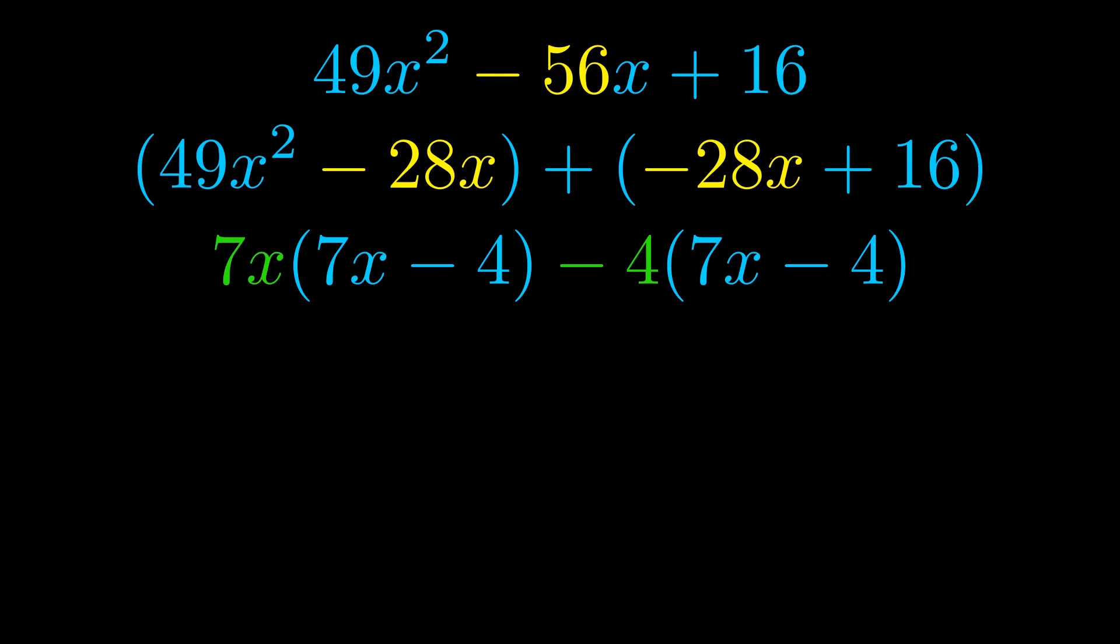Notice also how what remains inside of the parentheses is the same in both cases. The blue values are the same. Those blue values will become one of our factors and we will combine the two green values, the GCFs that we pulled out, to get the other one. And that is our fully factored equation.